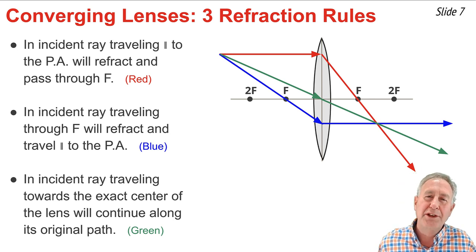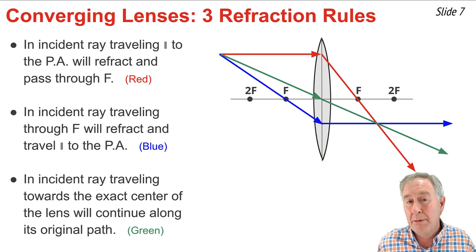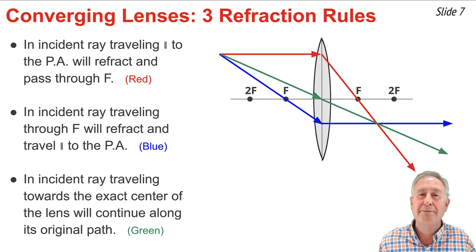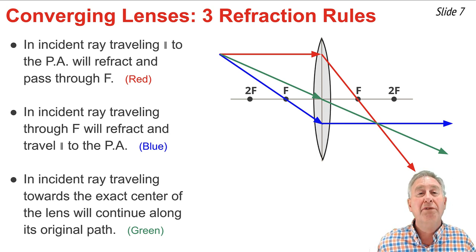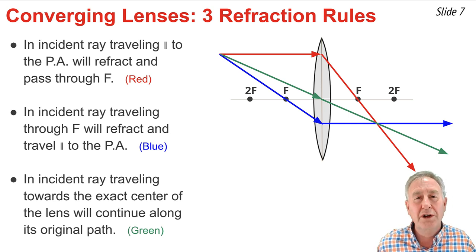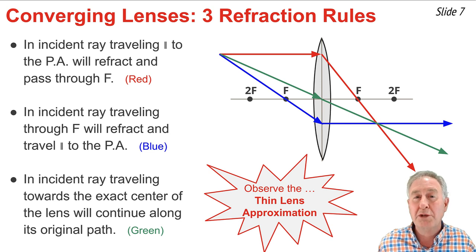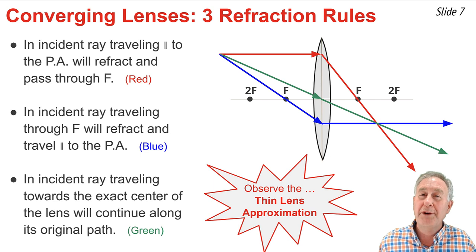There are a few things to note about this diagram. You might be bothered by the fact that the light was not refracted as it entered the lens and a second time as it exited. Instead, it was refracted once at the vertical axis. This is the so-called thin lens approximation, where we approximate the lens as being so thin that there is only one refraction taking place — that occurring at the vertical axis.